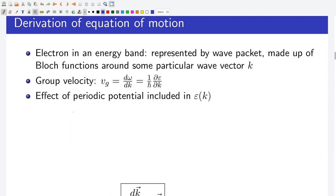Let me show a simple derivation of the equation of motion for band electrons, which will also help us understand the difference between free electrons and band electrons. An electron in an energy band can be represented by a wave packet made up of Bloch functions around some particular wave vector k. Consider a simple 1D case with an external electric field only; extension to a magnetic field is straightforward. The group velocity of the wave packet is given by v_g equals d omega/dk, and since E equals h-bar times omega, we can write group velocity as 1 over h-bar times del E del k. The effect of the periodic potential is included in the energy dispersion relation E(k).